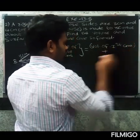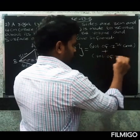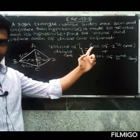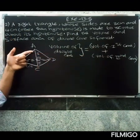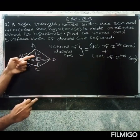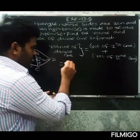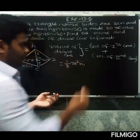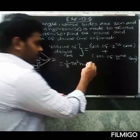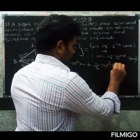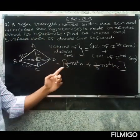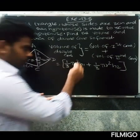Volume of first cone plus volume of second cone. The volume formula is one by three pi r squared h. So volume of first cone is one by three pi r squared h1, and volume of second cone is one by three pi r squared h2. Adding them: one by three pi r squared, and we need to add the radius value and then h1 plus h2.